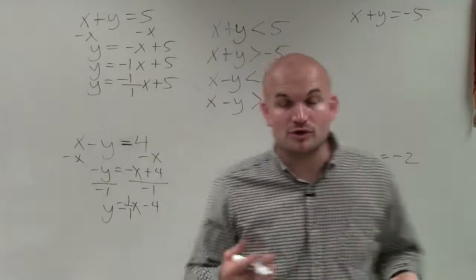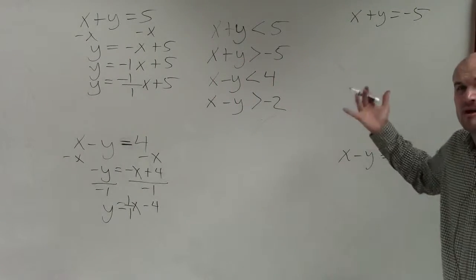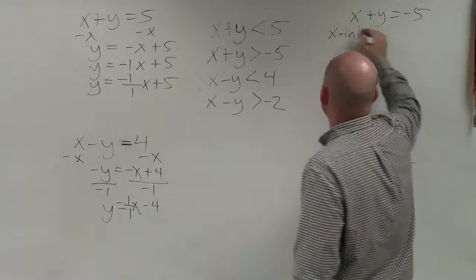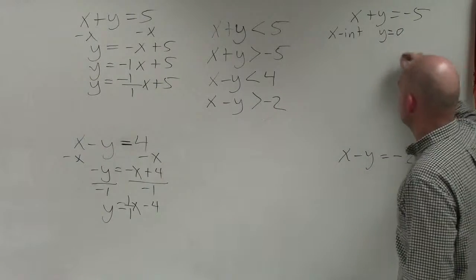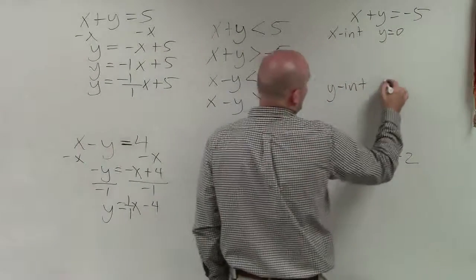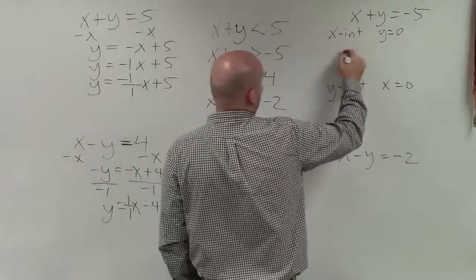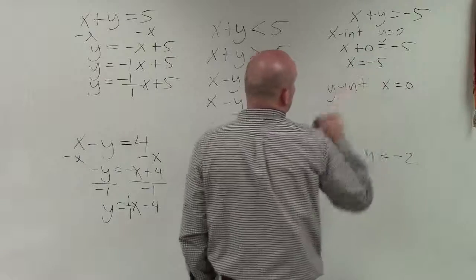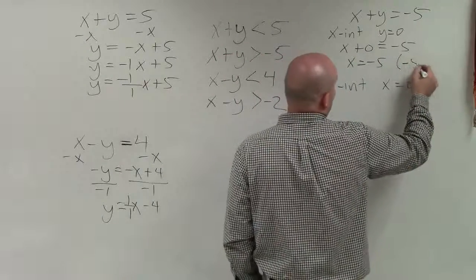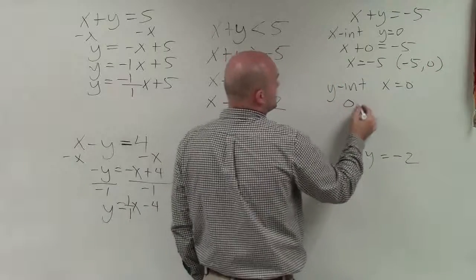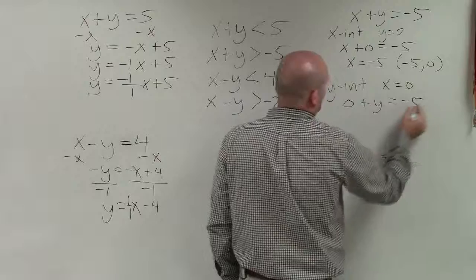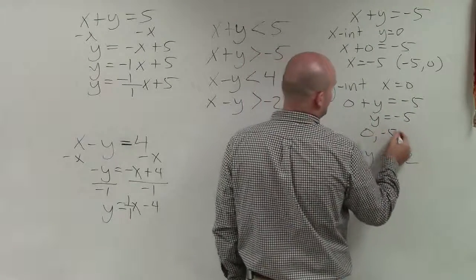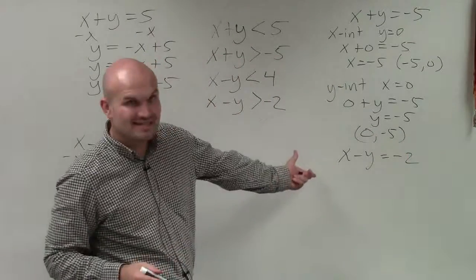When using the intercept method, all you do is find the x-intercept by setting y equal to 0, and find the y-intercept by setting x equal to 0. For x plus y equals negative 5, the x-intercept is negative 5 comma 0, and the y-intercept is 0 comma negative 5. Those are my two coordinates.